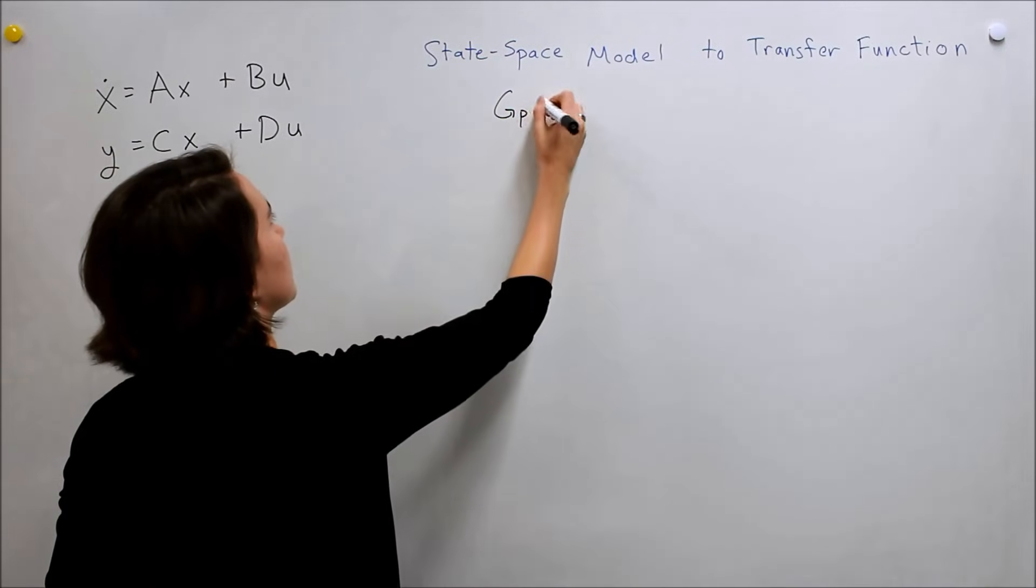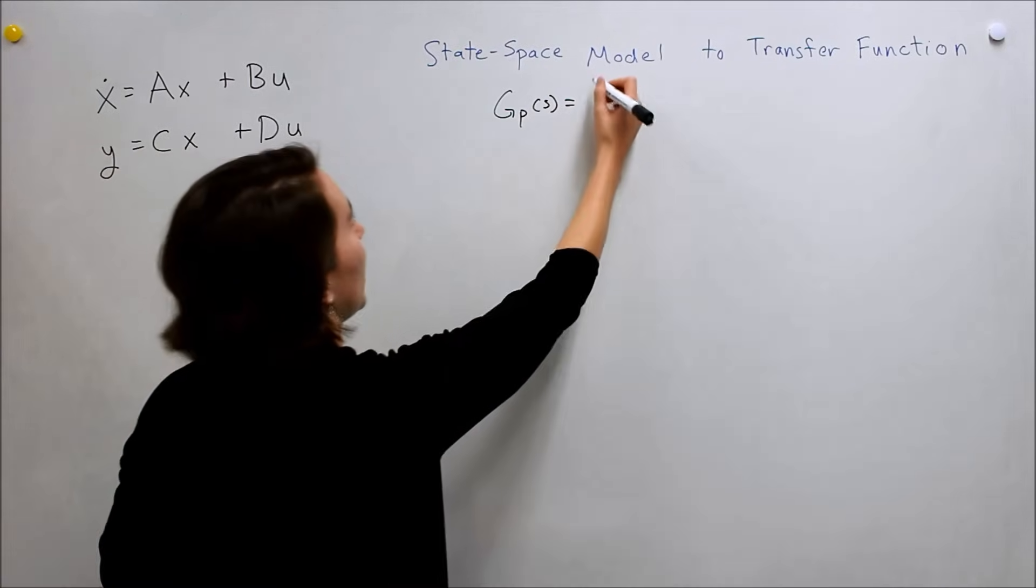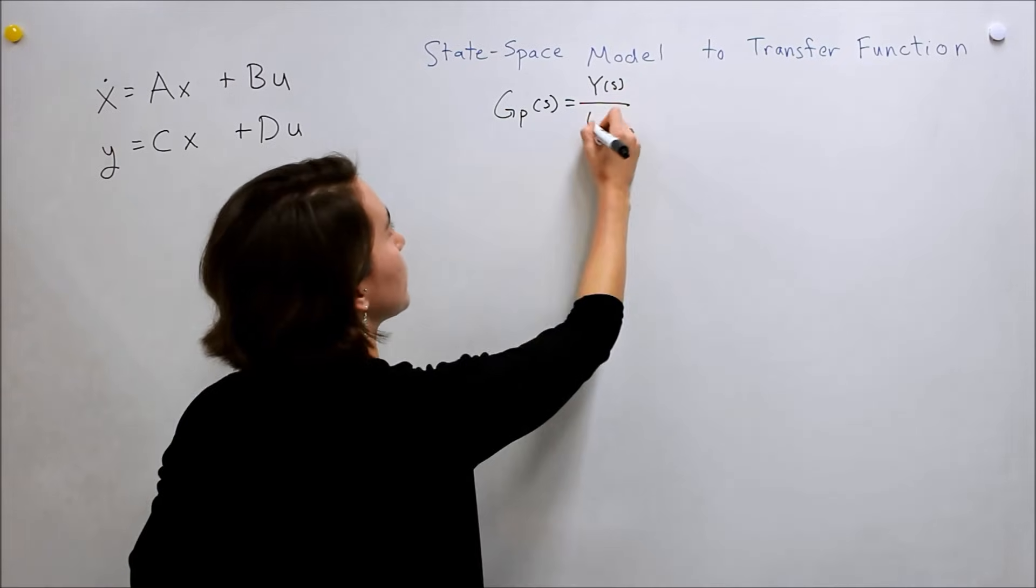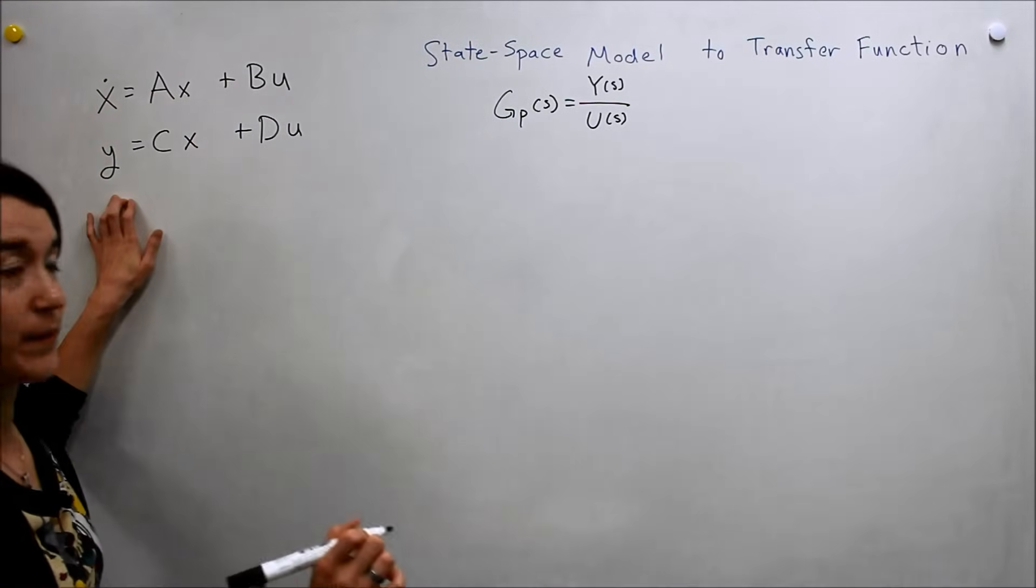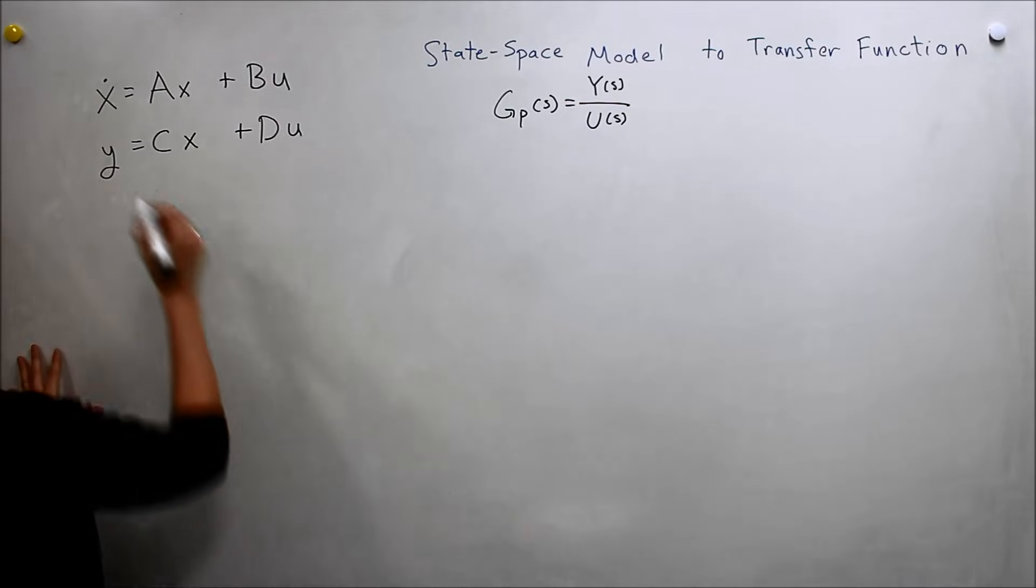So again, let's remember our transfer function is going to be the output, which in this case is y, y over the input, which is u, based on r. So these are the states, our inputs u, our outputs y. So, let's take the Laplace of this and see what happens.